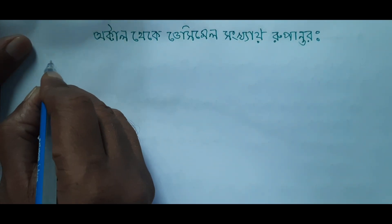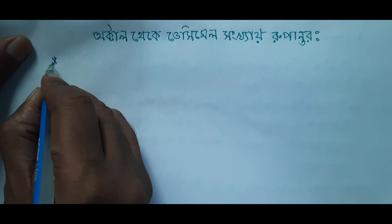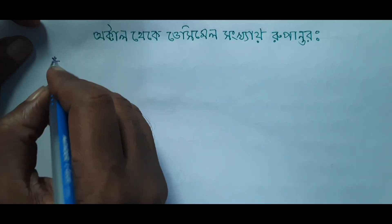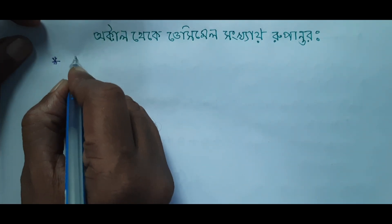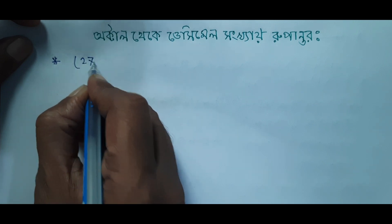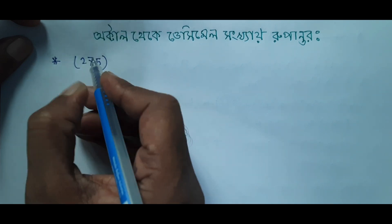So let's see. Here we have an example. Let's write: 2, 7, 5. The number is 2, 7, 5.